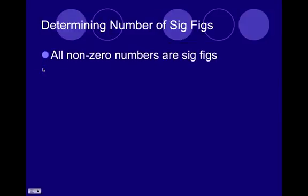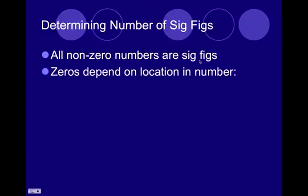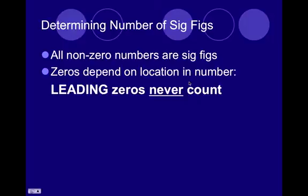So, if you're looking at a number, how do you know how many sig figs are in that number? Well, if it's not zero, then it is significant. Zeros depend on where they're at in the number. Leading zeros, like zeros in front, like if we had .0012, these guys are leading. They don't count. So, this particular number would have one, two sig figs.